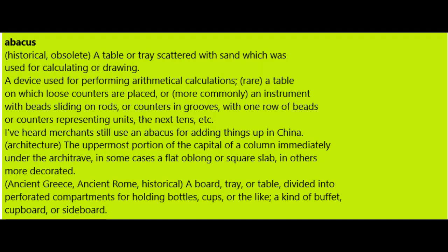Abacus. Historical, obsolete: a table or tray scattered with sand which was used for calculating or drawing. A device used for performing arithmetical calculations. Rare: a table on which loose counters are placed, or more commonly an instrument with beads sliding on rods or counters in grooves, with one row of beads or counters representing units, the next tens, etc. "I've heard merchants still use an abacus for adding things up in China."